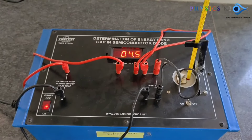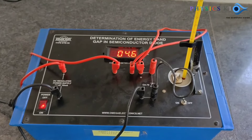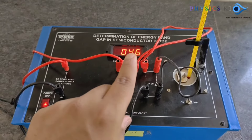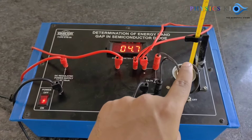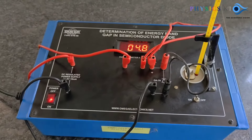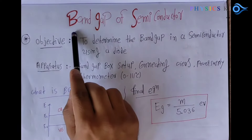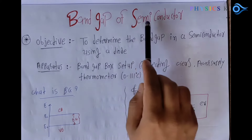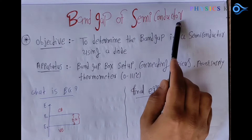Let's wait 10 to 15 minutes to raise the temperature to 90 degrees Celsius. As the temperature increases, the current will also increase. So we wait for that.